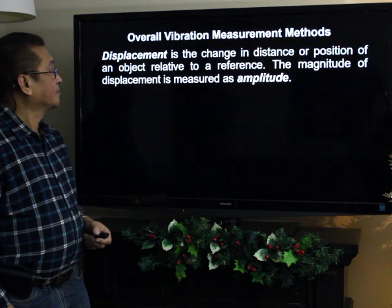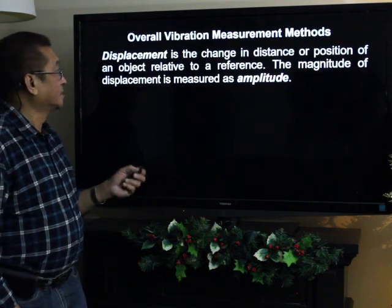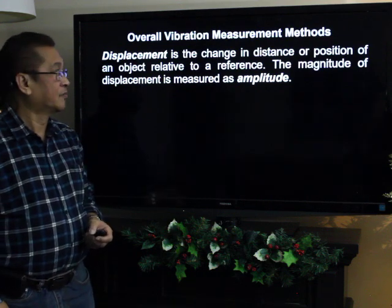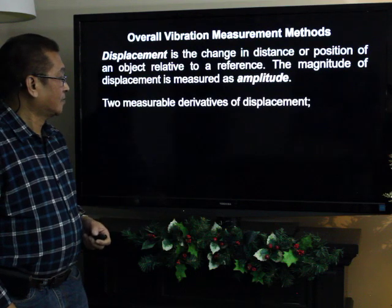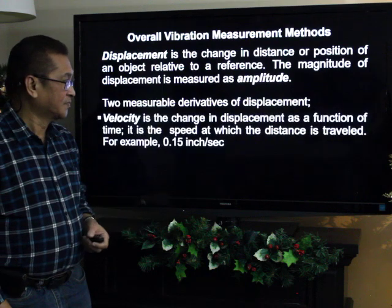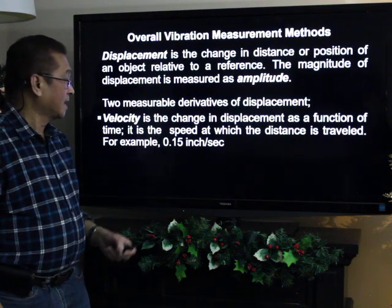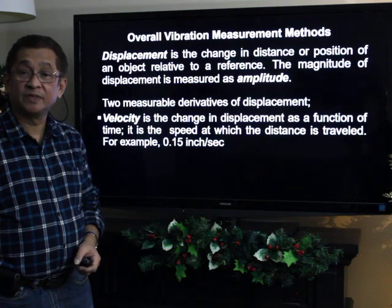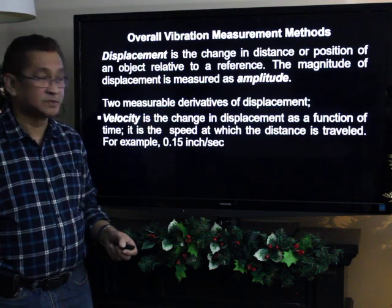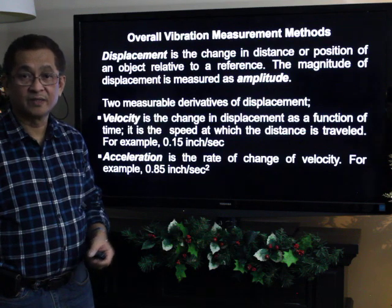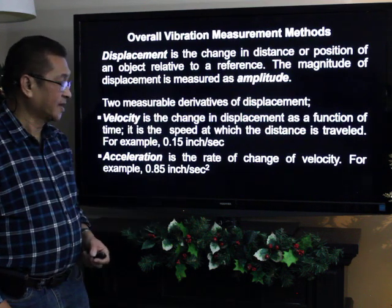Overall vibration measurement methods — there are three. The first is displacement: a change in distance or position relative to a reference, with magnitude measured as amplitude. The first derivative of displacement with respect to time is velocity — the rate at which displacement changes, for example 0.15 inches per second. Acceleration is the rate of change in velocity, mathematically the second derivative of displacement with respect to time — for instance, 0.85 inches per second squared.